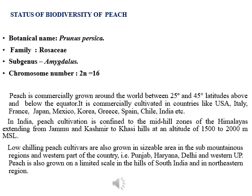Some low chilling varieties are cultivated in India in areas like Punjab, Haryana, Delhi, and Western UP. Peach is also grown on a limited scale in the hills of South India and the Northeastern region.